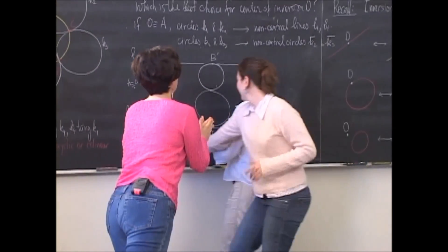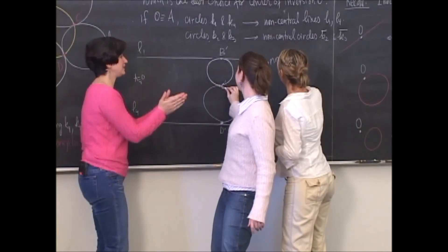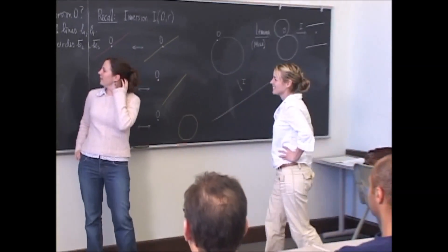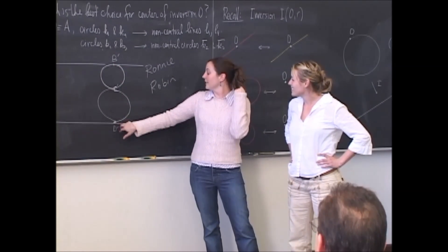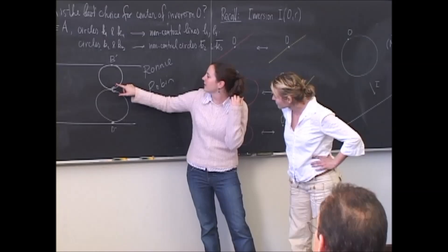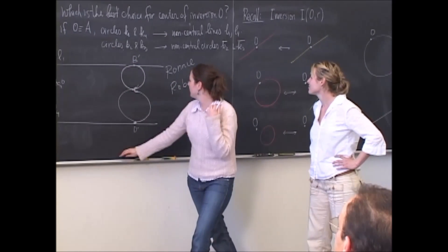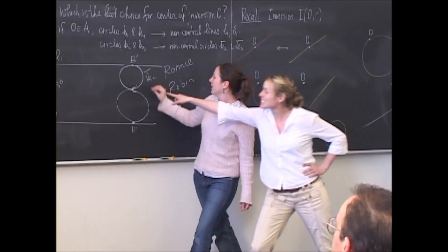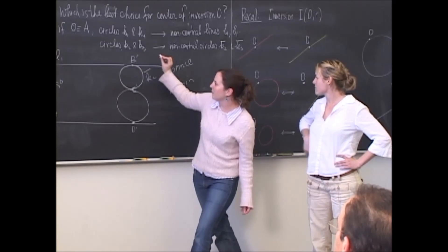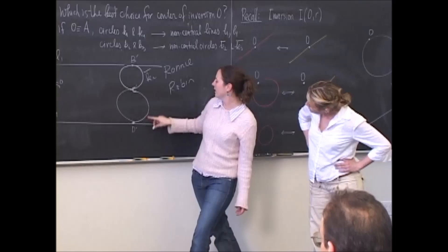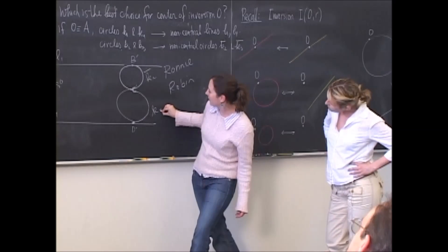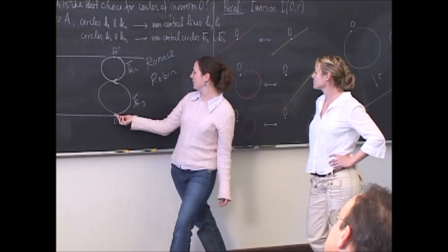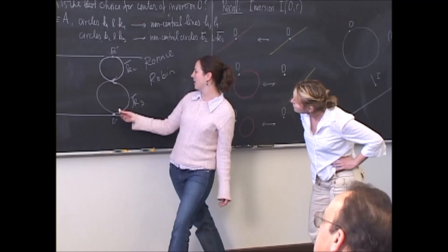Your names once again? They start with R, right? Robin and Ronnie. How did you draw the picture? Well, B turned to B prime, D turned to D prime, C turned to C prime, and K2 went to a non-central circle here, touches L1 at B prime. Because that's where it touched K1 over here. And this is K3 bar over here. It touches K2 at C prime over here, and it touches L4 at D prime over here.